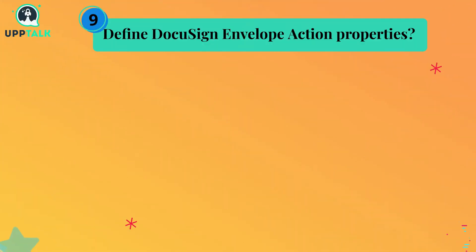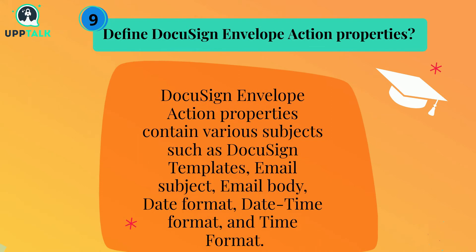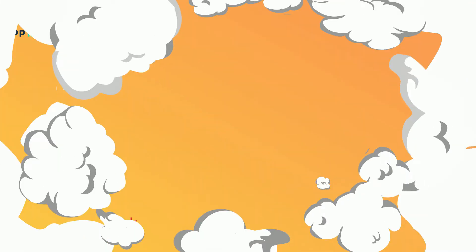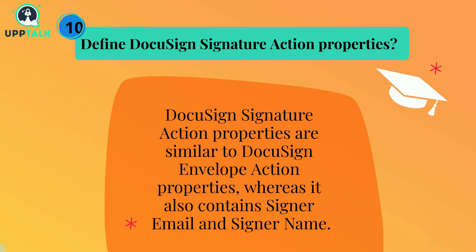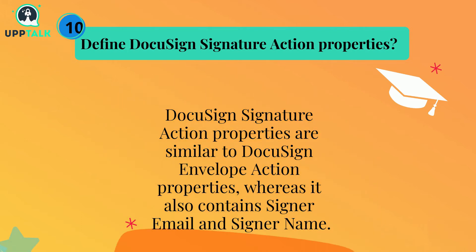Define DocuSign envelope action properties. DocuSign envelope action properties contain various subjects such as DocuSign templates, email subject, email body, date format, date time format, and time format. Define DocuSign signature action properties — DocuSign signature action properties are similar to DocuSign envelope action properties, but it also contains signer email and signer name.